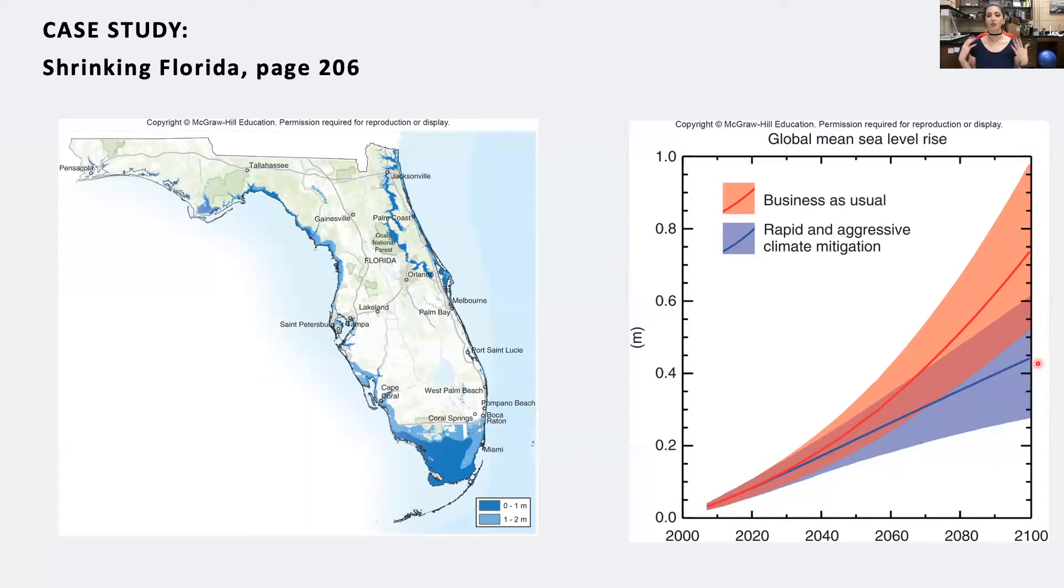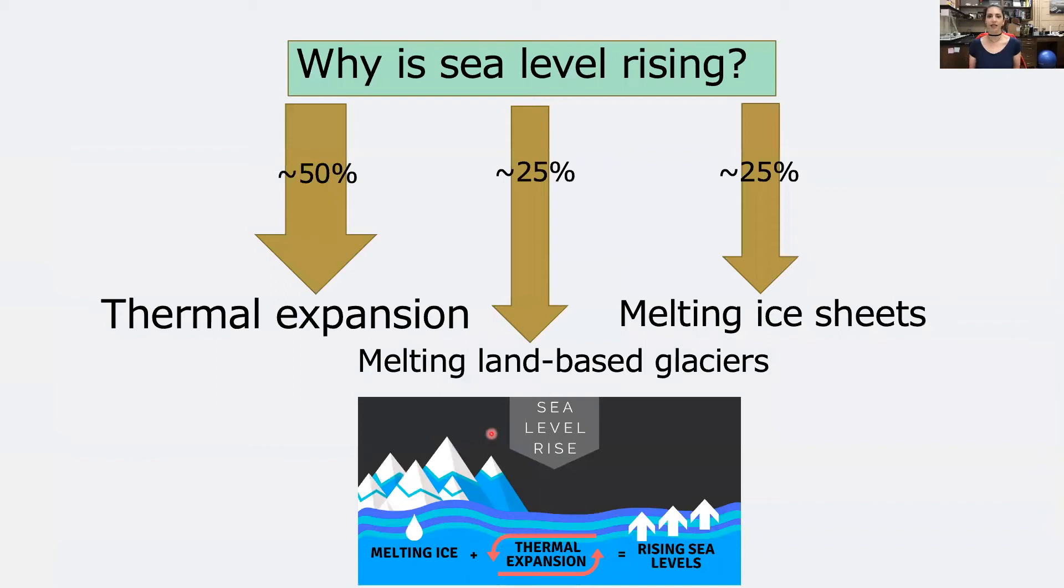This rise of one meter is enough to inundate most of Florida's coast, including Miami, Boca Raton, Cape Coral, and precious sites like the Everglades. This alarming prediction made the National Climate Assessment of 2014 name Miami as one of the U.S. cities most vulnerable to physical and economic damage resulting from human caused climate change. So that begs the question, why is sea level rising in the first place?